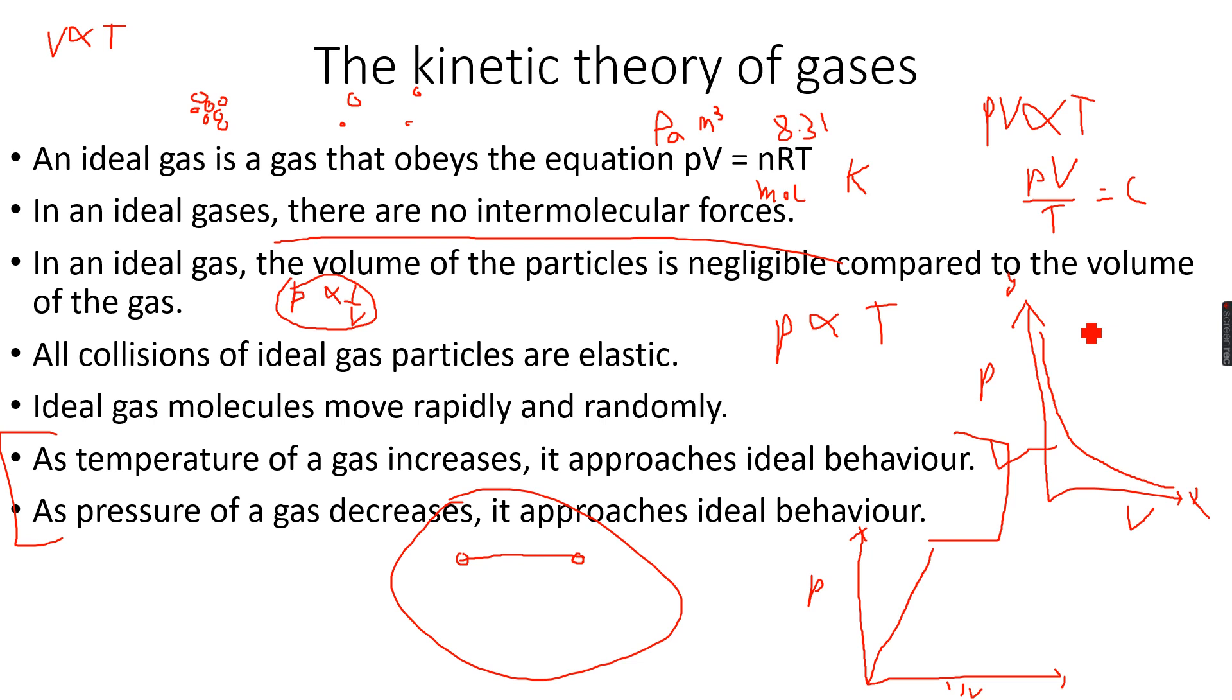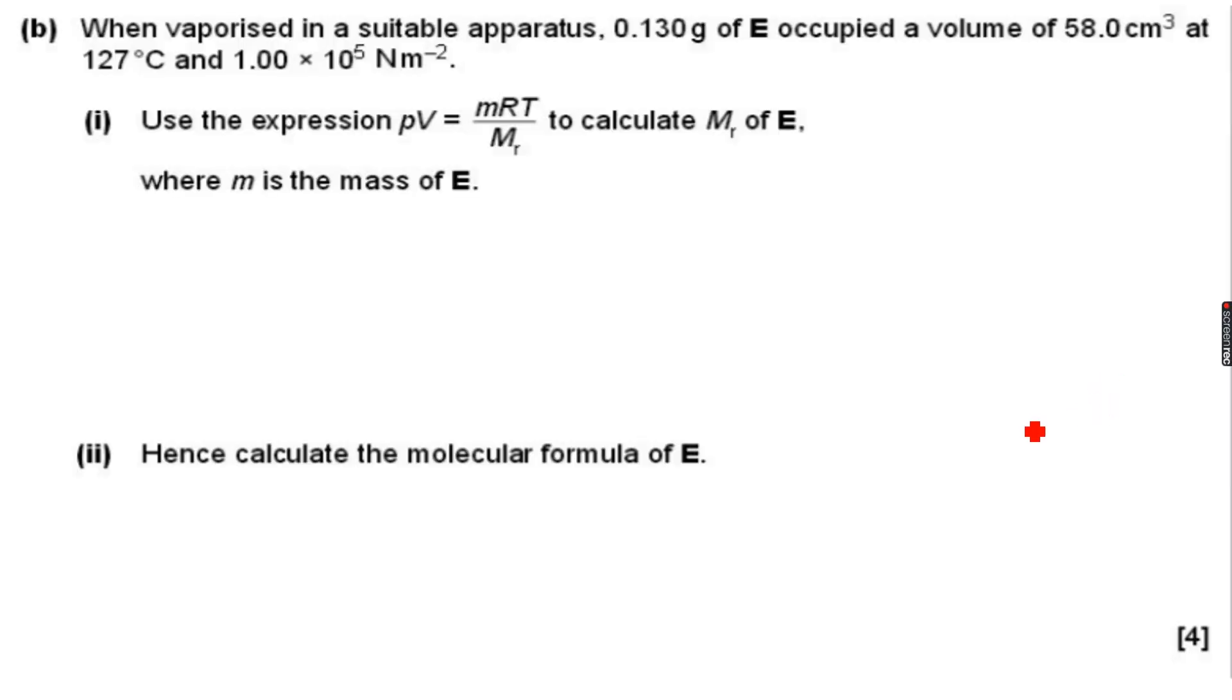Now let's move forward. Let's do an exercise based on PV equals nRT so that you understand how to use the equations. When vaporized in a suitable apparatus, 0.130 grams of E - let's say we are already given that the empirical formula of E is C3H6O2 - occupied a volume of 58 centimeter cube at 127 degrees Celsius and 1 times 10 to the power of 5 Newton per meter square. Newton per meter square is the same as Pascal.